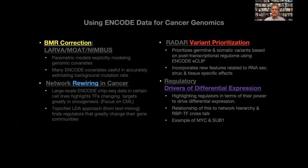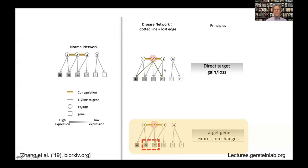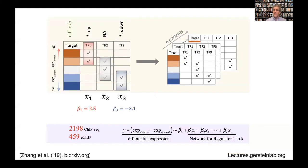The last topic is finding regulatory drivers of differential expression. In oncogenesis, you might have the actual regulatory connections between a TF and target change — rewiring. But you could also have a situation where the targets remain the same but the gene expression of the target genes changes a lot. We want to find the TFs associated with target genes that change most in cancer. We use TCGA data showing how genes change in cancer and the ENCODE regulatory network to associate regulators with targets, then build a simple regression model to explain the change in gene expression from all regulators.